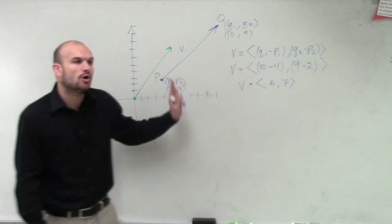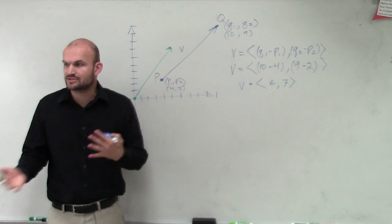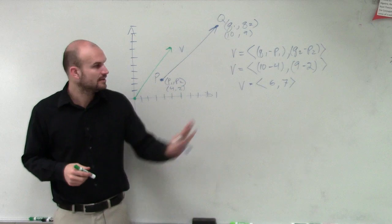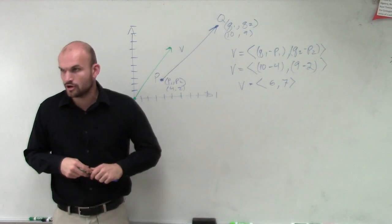So it's something that's going to be similar, but the component form just allows us to use some very special, it allows us to be able to work with the vectors in a very standardized way. So that's how you find the component form of your vector.